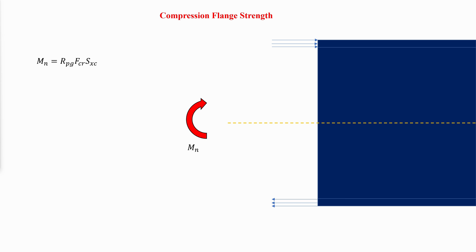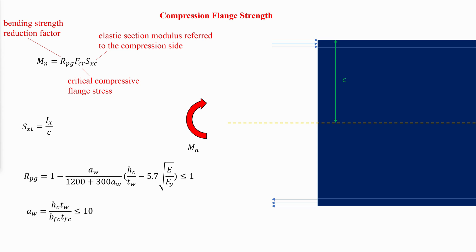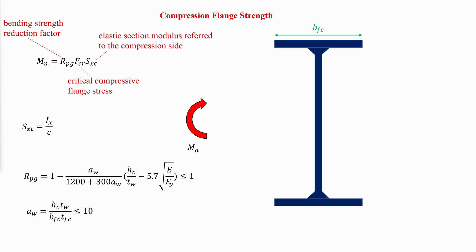The compression flange nominal strength is given by the bending strength reduction factor multiplied by the critical compressive flange stress due to yielding or local buckling, times the elastic section modulus referred to the compression side. The bending strength reduction factor depends on AW, the ratio of the web area to the compression flange area; BFC, the width of the compression flange; and TFC, the thickness of the compression flange.